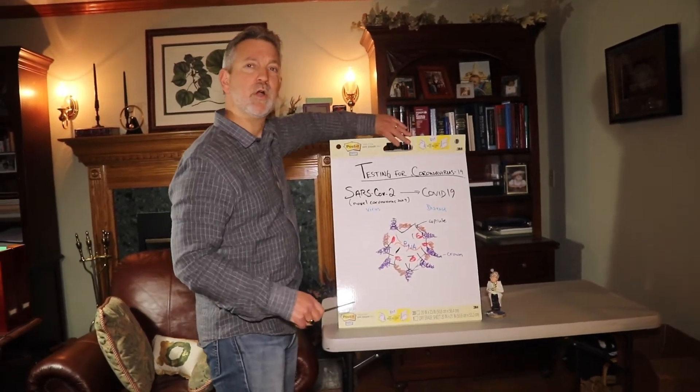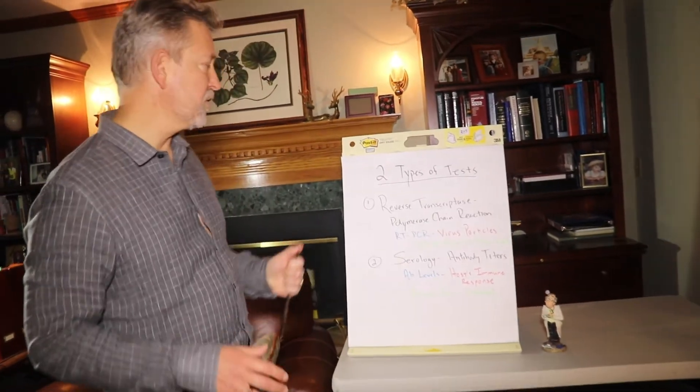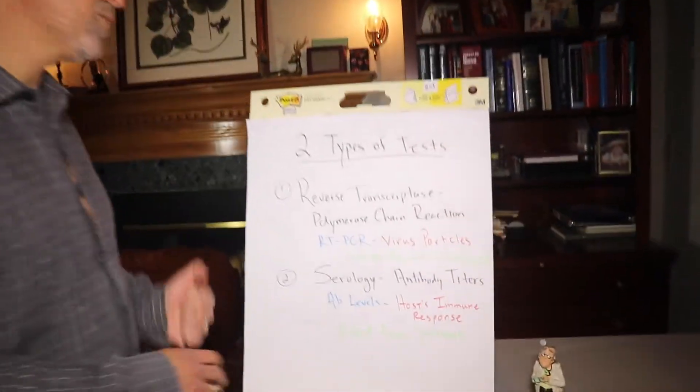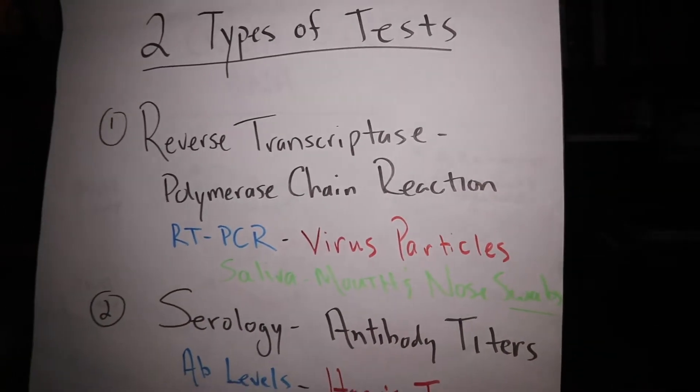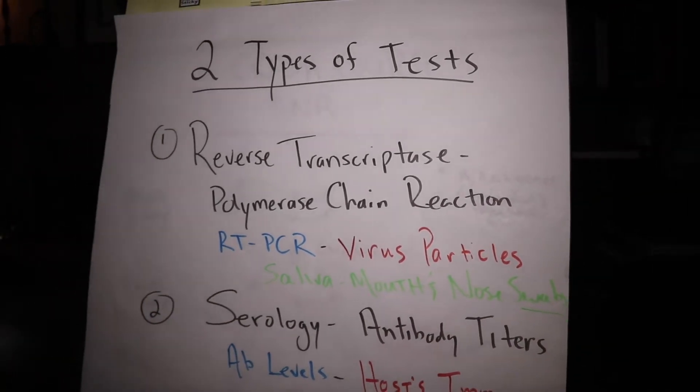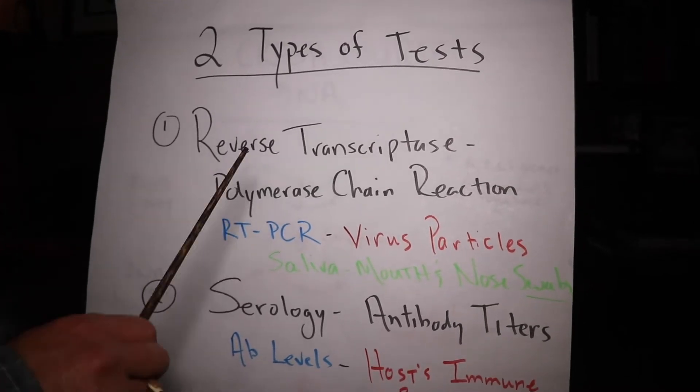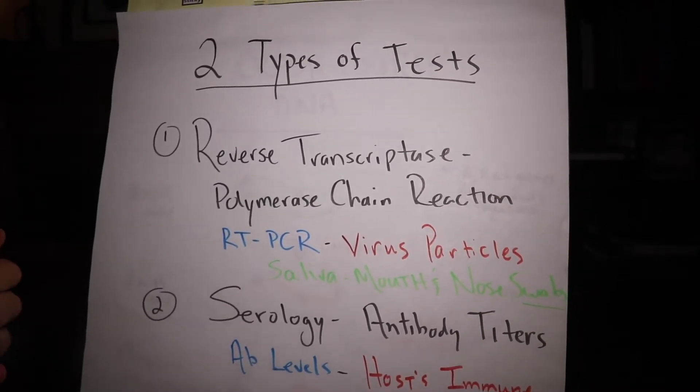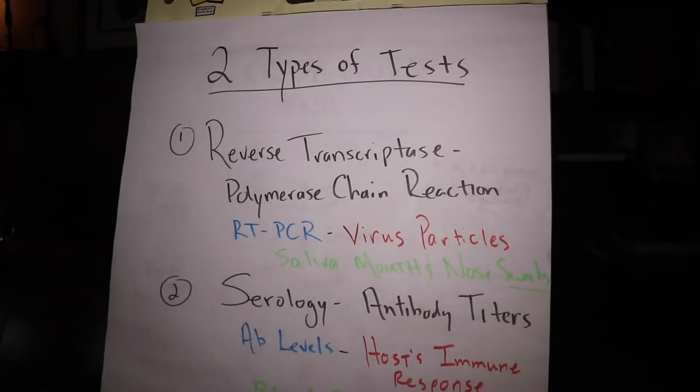So, let's go to the tests. There are two types of tests. The first one is a mouthful. Reverse Transcriptase Polymerase Chain Reaction, or RT-PCR, let's call it that. This is where we measure parts of the virus, or virus particles, in this case the code. We get this from saliva in our mouth and our nose and use swabs to do this. This is what the long lines of cars and tests are for.